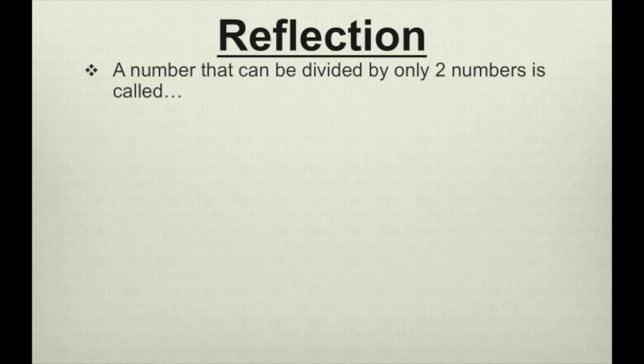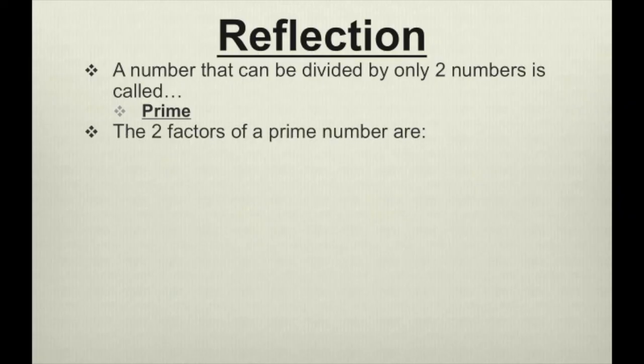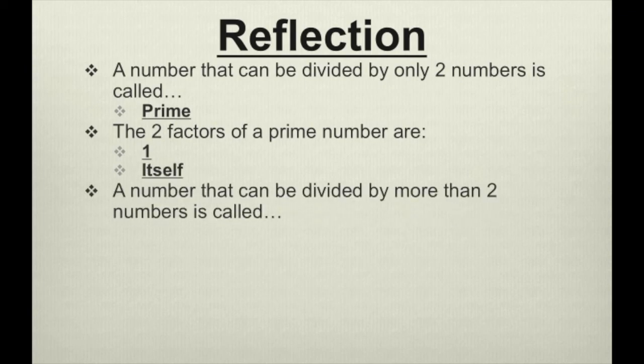So what did we learn from this lesson? A number that can be divided by only two numbers is called prime. The two factors of a prime number are 1 and the number itself. A number that can be divided by more than two numbers is called composite.